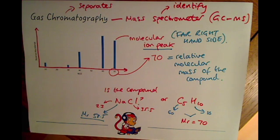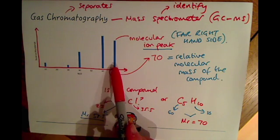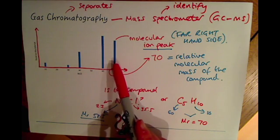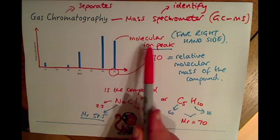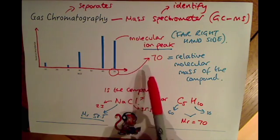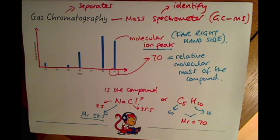So that's gas chromatography linked with a mass spectrometer. To recap for the higher tier: you need to be able to read the molecular ion peak from the right-hand side of a mass spectrometer graph. That gives you the relative molecular mass of the compound, which you then use to work out which compound has been identified.